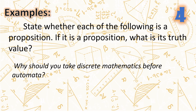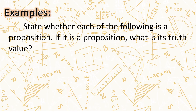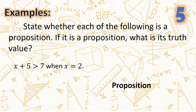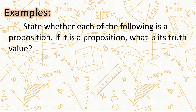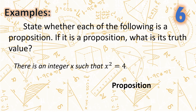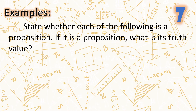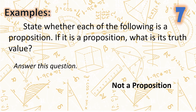Number four: 'Why should you take discrete mathematics before automata?' This is not a proposition because it is an interrogative sentence. Number five: 'x plus five is greater than seven when x equals two.' The value of x is assigned, therefore this is a proposition. However, this is false. Number six: 'There is an integer x such that x squared equals four.' This is a proposition, and the truth value is true. Number seven: 'Answer this question.' This is not a proposition because it is an imperative sentence.